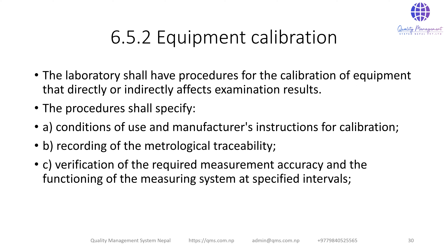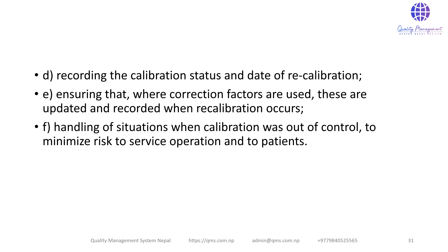6.5.2 Equipment Calibration: The laboratory shall have a procedure for the calibration of equipment that directly or indirectly affects examination results. The procedure shall specify: conditions of use and manufacturer instructions for calibration; recording of metrological traceability; verification of the required measurement accuracy and functioning of the measurement system at specified intervals; recording of calibration status and date of recalibration; ensuring correction factors are updated and recorded when recalibration occurs; and review of handling of situations where calibration was out of control to minimize risk to service operation and to patients.